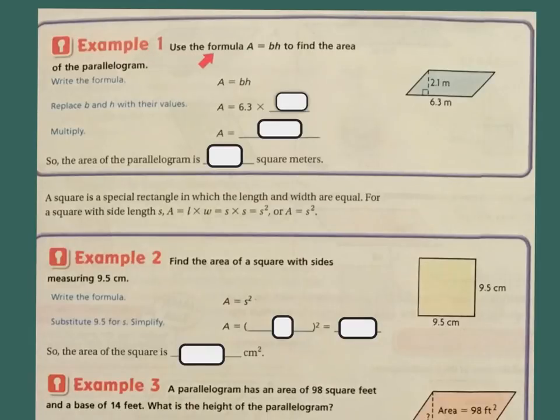Example one: Use the formula A equals BH to find the area of a parallelogram. So we did a bunch of equations prior, but now all we're going to do is plug in. Wherever you see B, you're going to plug in the base. Wherever you see H, you're going to plug in the height. So my base is 6.3 meters and my height is 2.1 meters. When I replace A equals 6.3 times 2.1, I'm going to multiply them and I get 13.23. So the area of the parallelogram is 13.23.